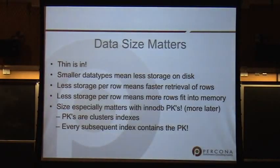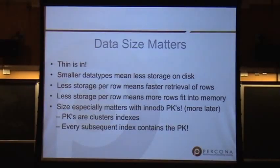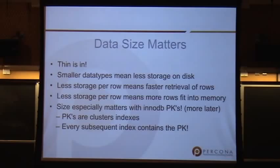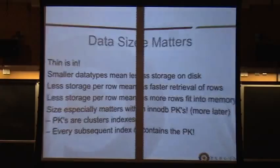In InnoDB, primary key indexes are clustered — stored on disk based on the primary key. Every subsequent index you create also contains that primary key as a pointer. So if you have a 100-byte primary key, every other index includes that 100-byte key. Even a tiny column like male/female would then have the primary key included, really bloating your database if you use giant data types.